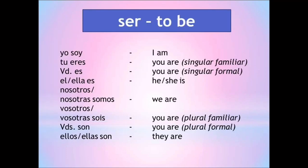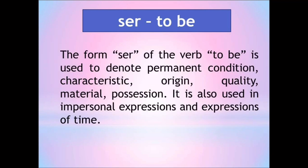Ser, meaning 'to be.' As we have learned in past lessons, verbs change to reflect the who and the when. Some verbs like ser are extra irregular and transform not only depending on person, but also depending on tense. You will notice that the simple future tense includes the whole infinitive plus a pattern of endings. Present tense: yo soy (I am), tú eres (you are, singular familiar), usted es (you are, singular formal), él/ella es (he or she is), nosotros/nosotras somos (we are), vosotros/vosotras sois (you are, plural familiar), ustedes son (you are, plural formal), ellos/ellas son (they are). The verb ser is used to denote permanent condition, characteristic, origin, quality, material, and possession. It is also used in impersonal expressions and expressions of time.